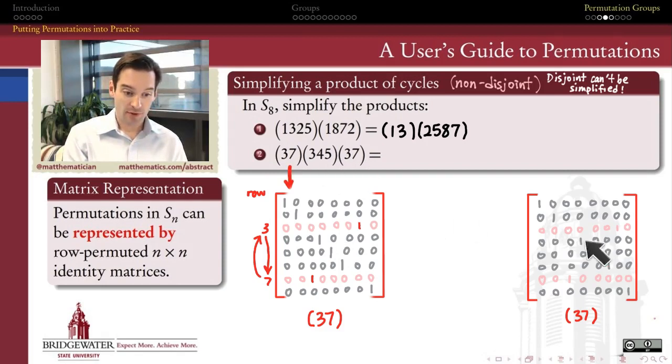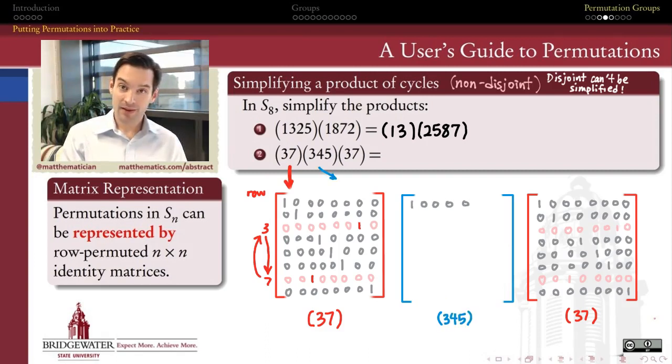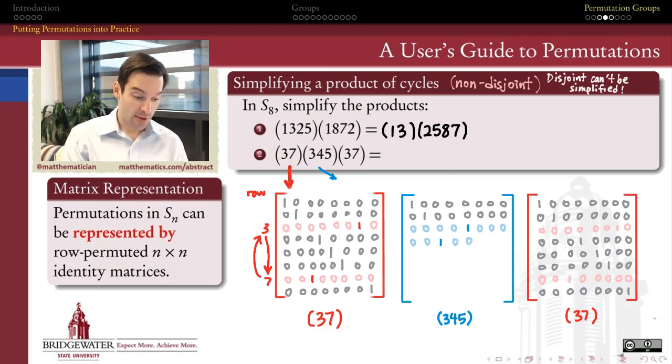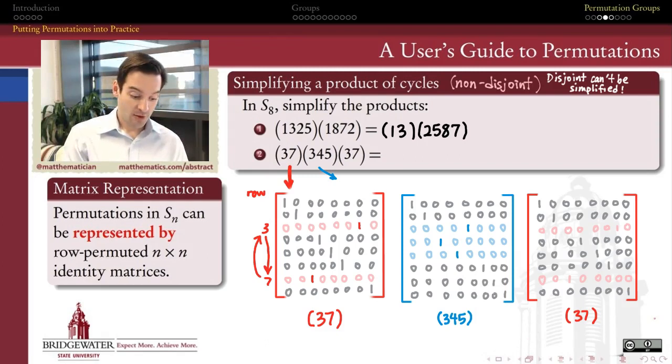I have (3 7) going on in both the first and last factor of this product. (3 4 5), meanwhile, is the factor here in the middle. That I'm going to represent by an 8 by 8 identity matrix in which the third row of that identity matrix has moved to the fourth position, the fifth row back to the third position, the other rows remaining put.